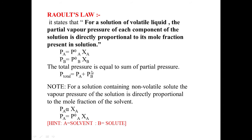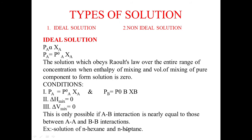If both components are volatile, total pressure is the sum of partial pressures of A and B. If the solute is non-volatile, it doesn't contribute to total pressure, so P_total equals PA only, which equals P⁰A × XA. Here A is the solvent and B is the solute.